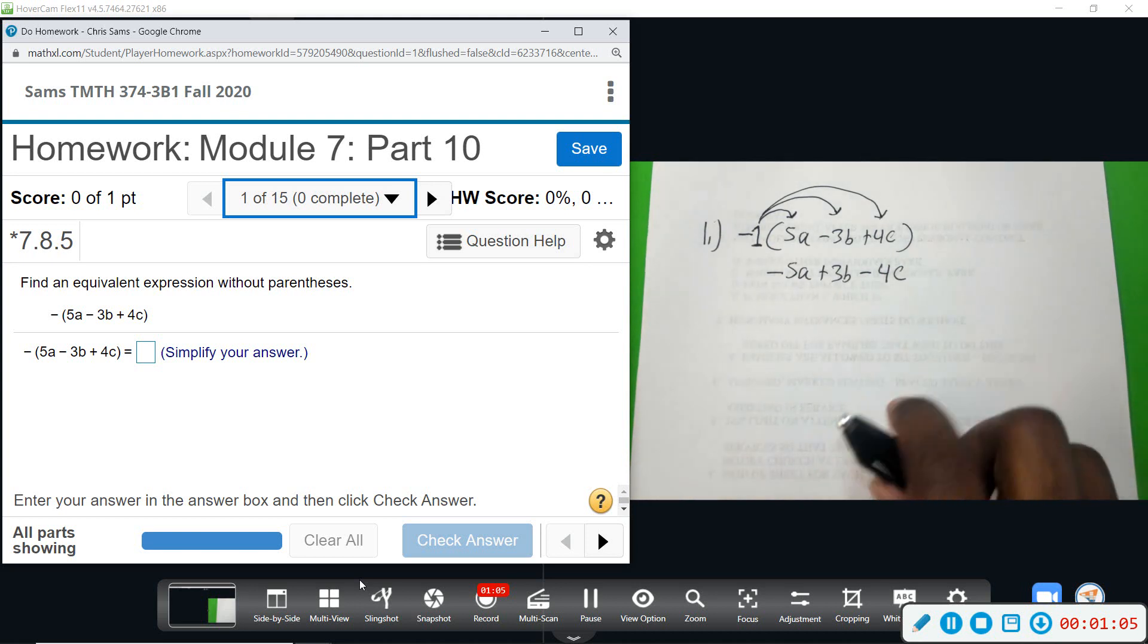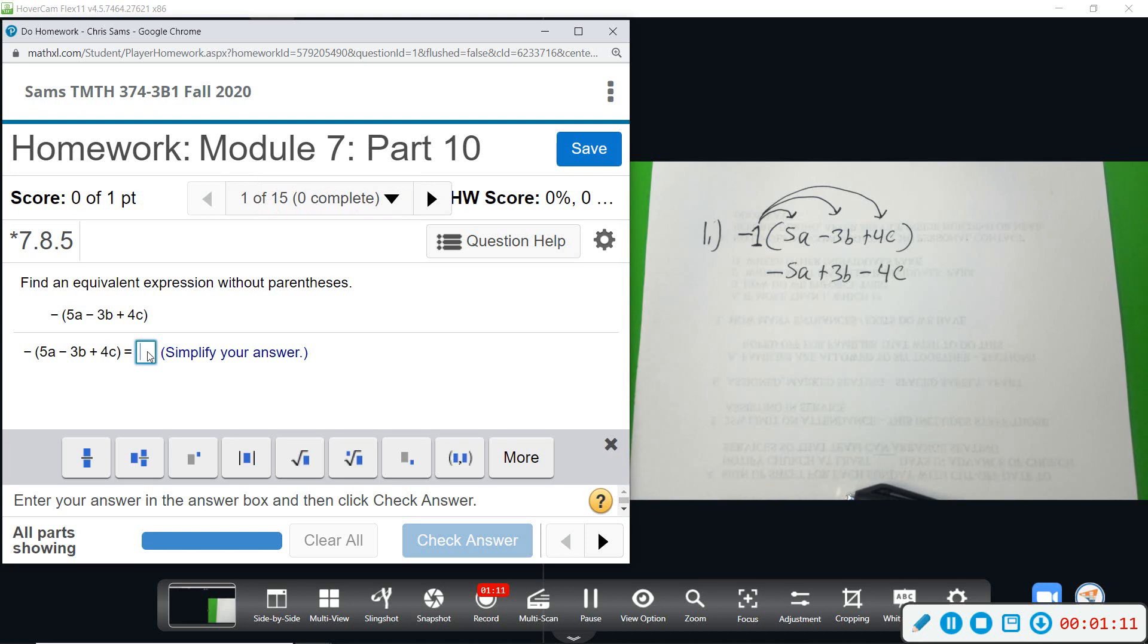The parentheses are no longer needed, so this is the new expression without parentheses: negative 5a plus 3b minus 4c.